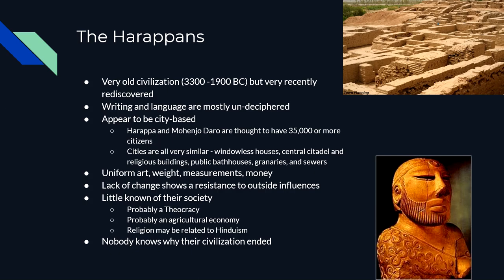Other things we found include uniform art, meaning that they were all culturally similar. They had uniform weight measurements — whatever they used was consistent throughout the civilization — and similar measurements used throughout the entire society, meaning they were connected to each other somehow. They also had uniform money; what we believe was their currency could be found throughout the landscape, so they were at least trading with each other on similar terms.